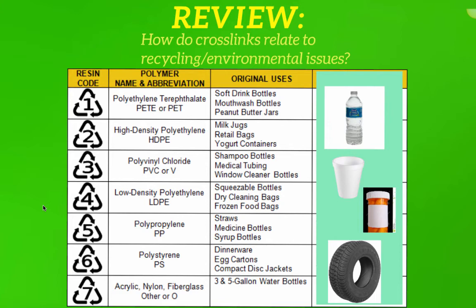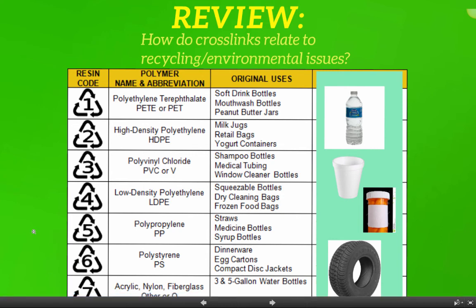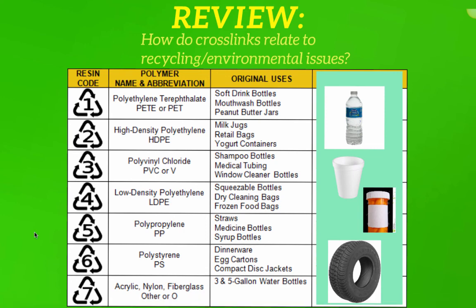As you move into the 5s, 6s, and 7s, they're really, really hard — to the point where a 7, which would have the most crosslinks, could be like a tire or a bulletproof vest. So the properties change because the crosslinks are changing. The 1s have the least amount of crosslinks, that's why they're the easiest to recycle. Anything with a 7 has the most crosslinks, that's why they're the most difficult to recycle. It's the crosslinks that determine how easily something can be recycled or not.